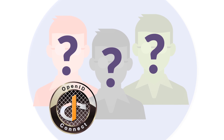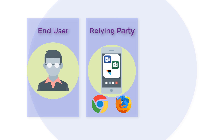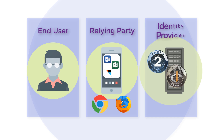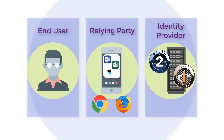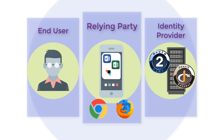The end user is the entity for whom we are requesting identity information. In OAuth 2.0, this refers to the resource owner, and one of the resources they own is their own identity. The relying party is an OAuth 2.0 client that relies on the identity provider to authenticate users and request claims about that user. The identity provider is an OAuth 2.0 authorization server which offers authentication as a service. It ensures the end user is authenticated and provides claims about the end user and the authentication event to the relying party.